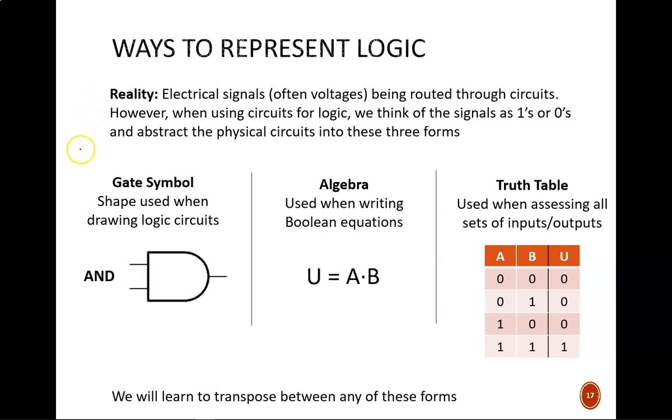We can also abstract logic operations. We begin with the logical concept, such as Tabitha will date Cody if he is tall and has red hair, and then represent it in another form. The three main forms you need here are gate symbols, Boolean algebra, and truth tables. All of these examples here show AND logic.